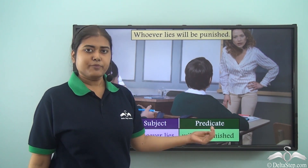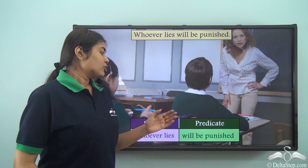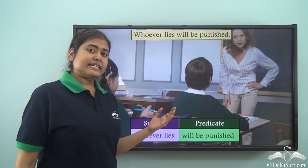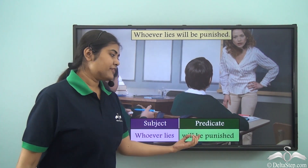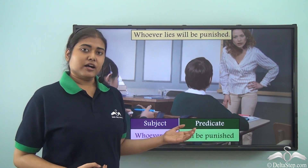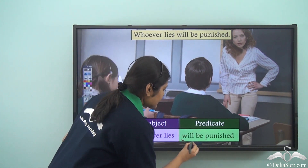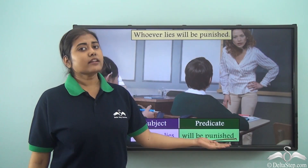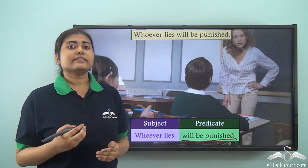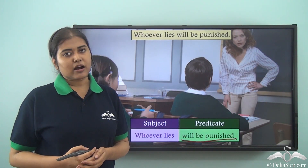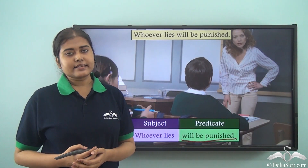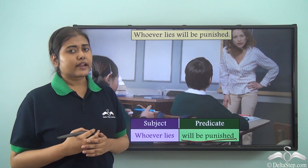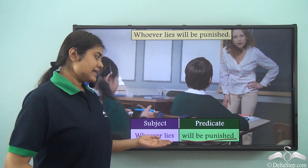You need to understand the logic behind why one verb is included within the subject and another is in the predicate. You should also notice that in all previous examples the predicate included the verb and some other words, but in this case the entire predicate simply consists of the verb with no other words. Since the verb is an essential part of the predicate, there can be cases where the predicate contains just the verb and nothing else.